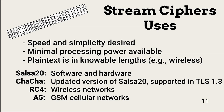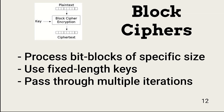These are four examples of where stream ciphers are used. Unlike stream ciphers, block ciphers process bit blocks of a specific size. The keys used are fixed length and are not dependent upon the size of the plaintext. Each bit block is processed multiple times, or rounds, to ensure a high level of entropy.